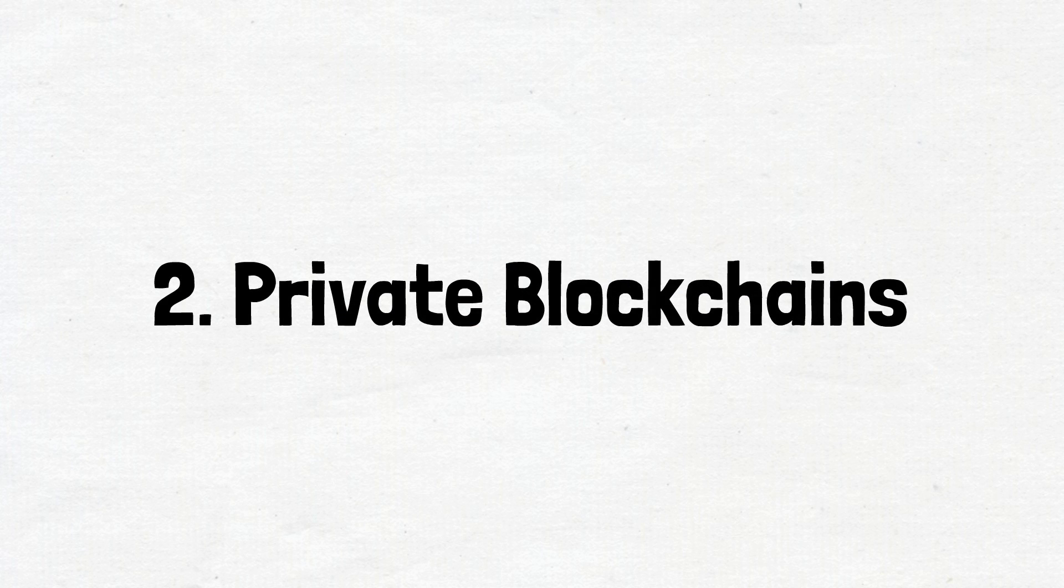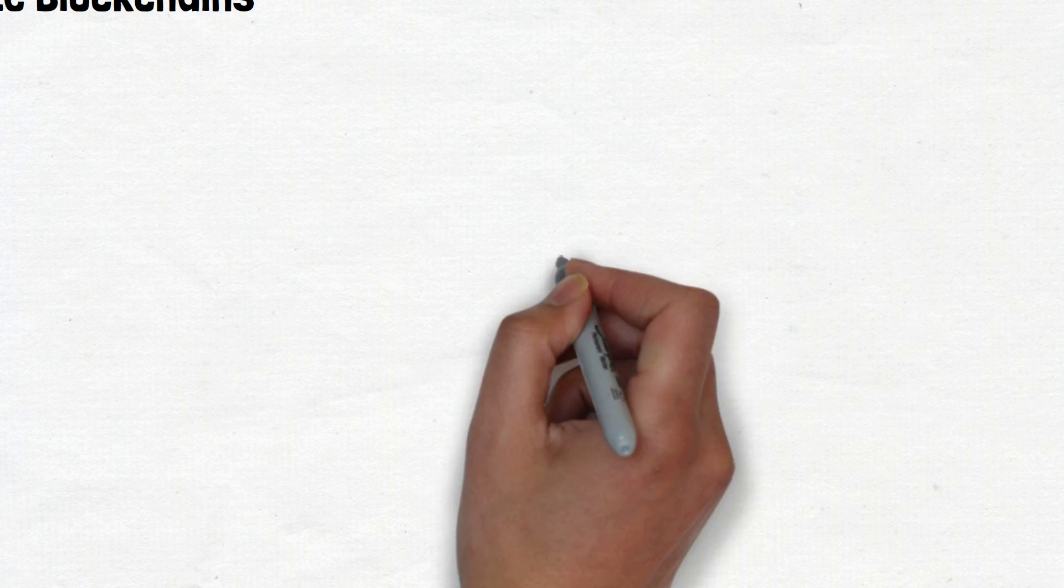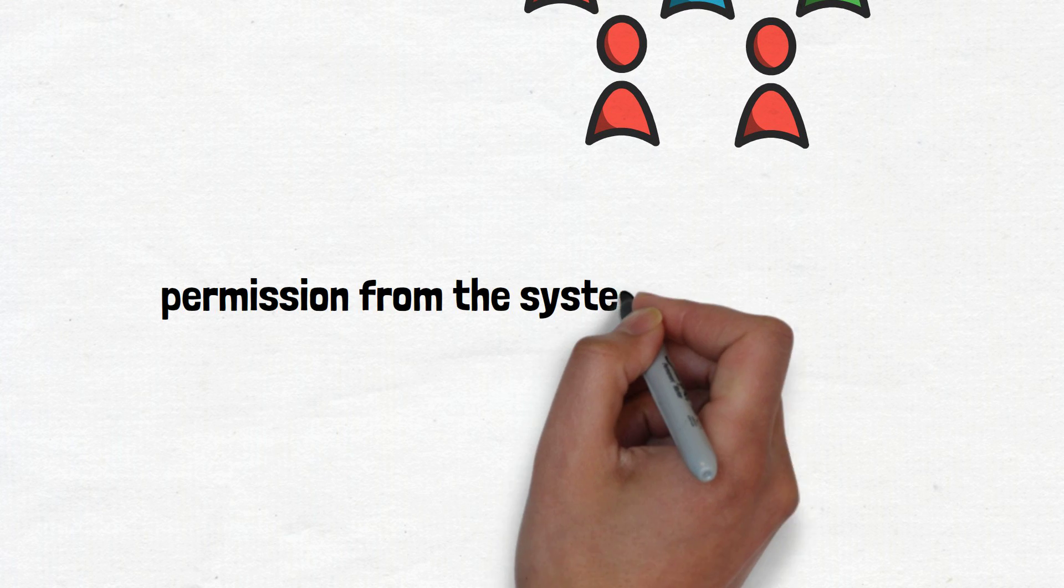Number two is private blockchains. These types of blockchains are not open. They have access restrictions. People who want to join require permission from the system administrator. They are typically governed by one entity, meaning they're centralized. For example, Hyperledger is a private blockchain.